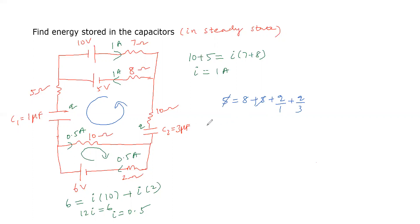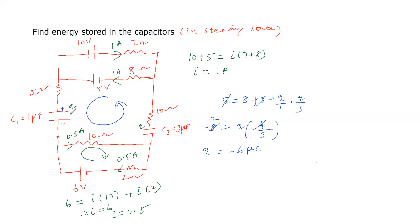The 5 terms cancel on both sides, leaving minus 8 equals Q times (4/3) after taking LCM of 3. This gives Q equals minus 6 micro coulombs. The negative sign means our assumed polarity was reversed, so the actual charge magnitude is 6 micro coulombs. Since we only need energy, we take Q as 6 µC.